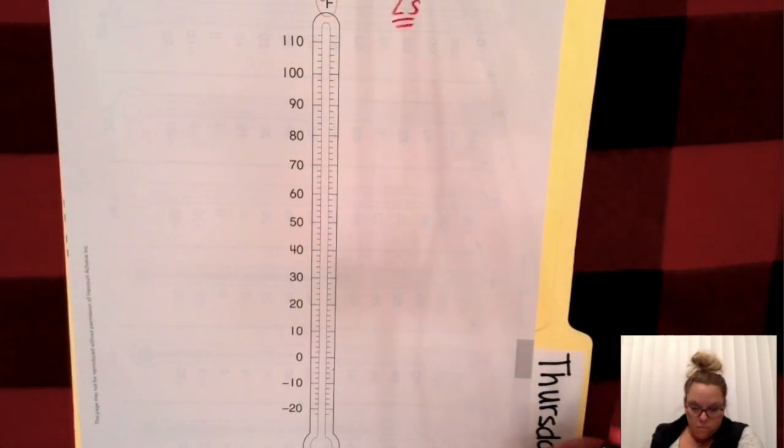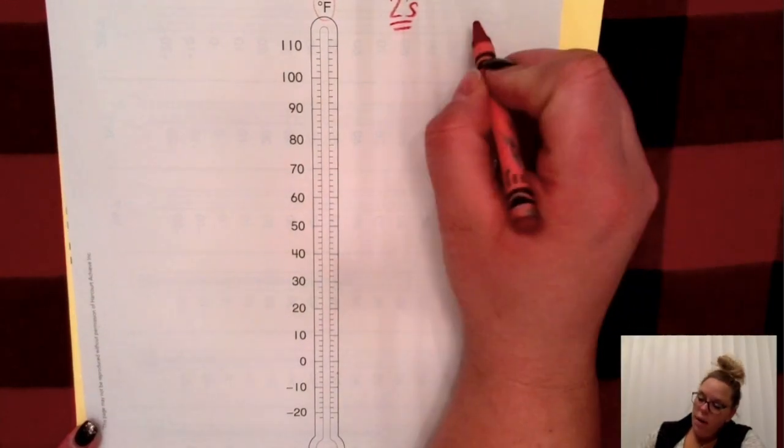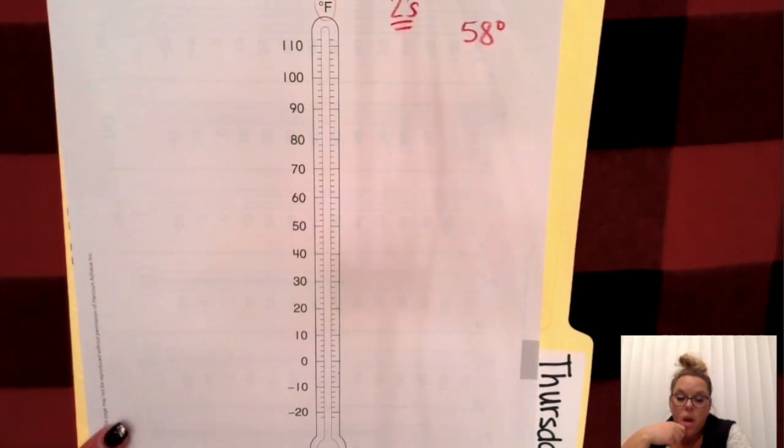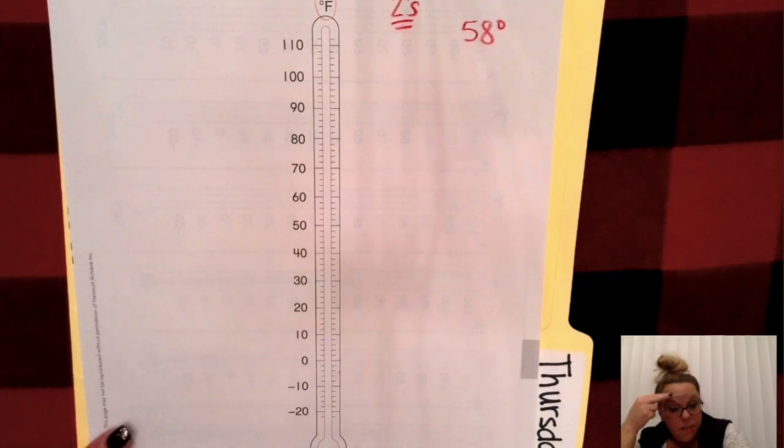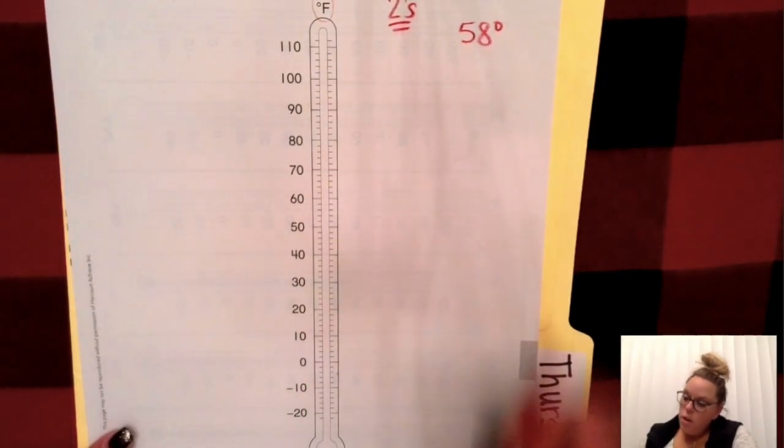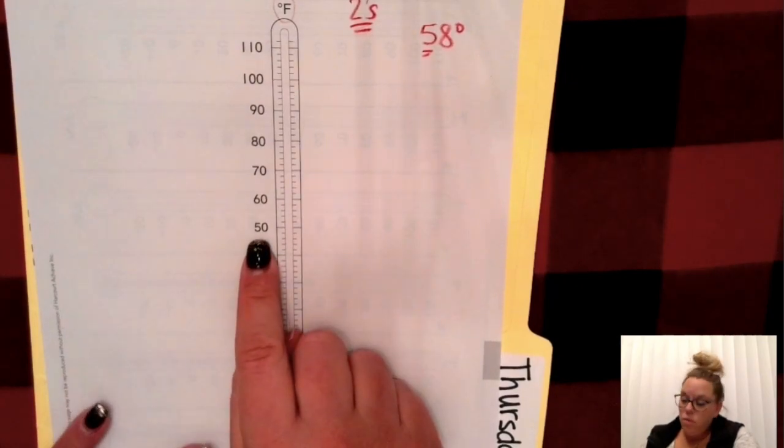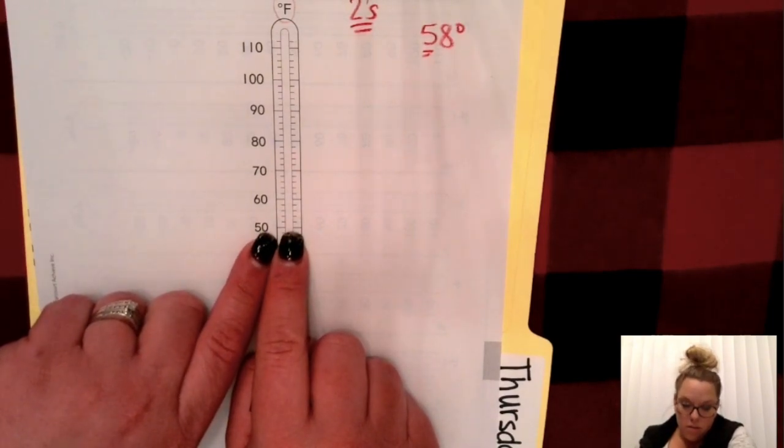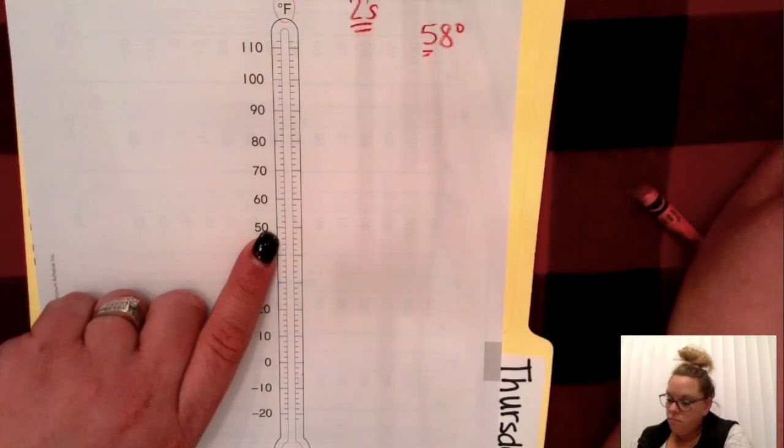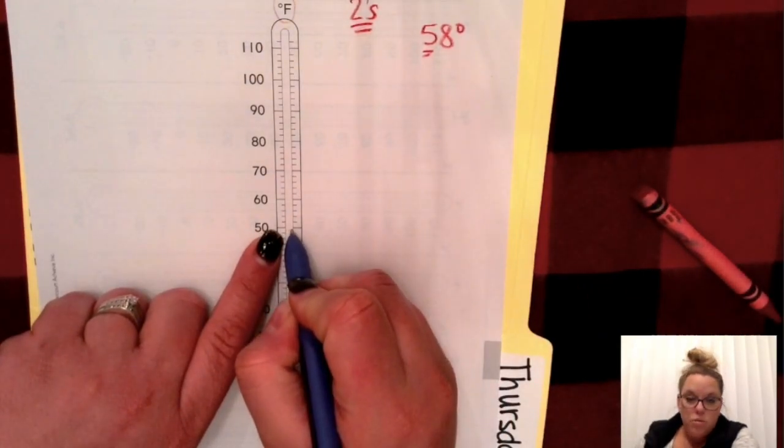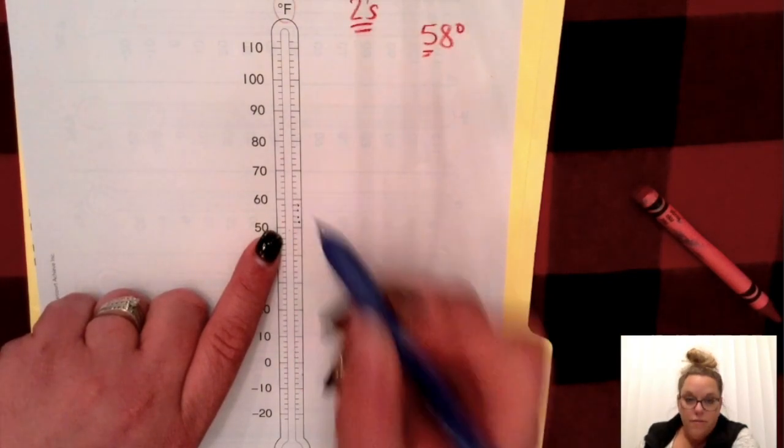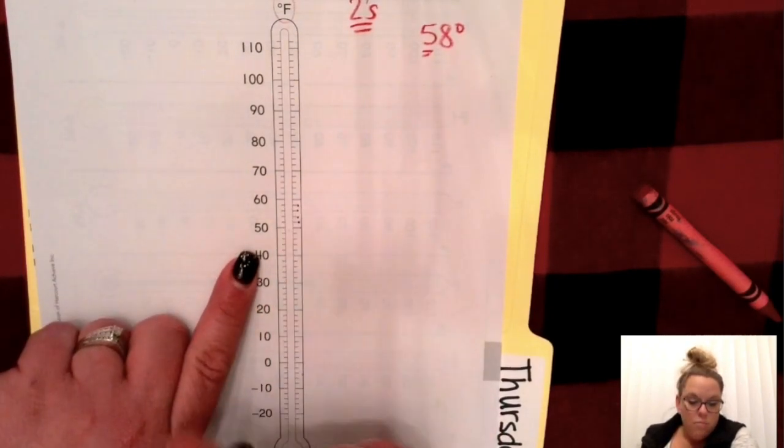Now, I want you to go ahead and we're going to look for 58 degrees. How am I going to find 58 degrees on the thermometer? Well, if I'm looking for 58, I'm going to go and find the number 50. And now I'm going to count by twos from 50 to find 58. So, here's 50. Now we count by twos to get to 58: 52, 54, 56, 58. So it's that last line before you get to 60.